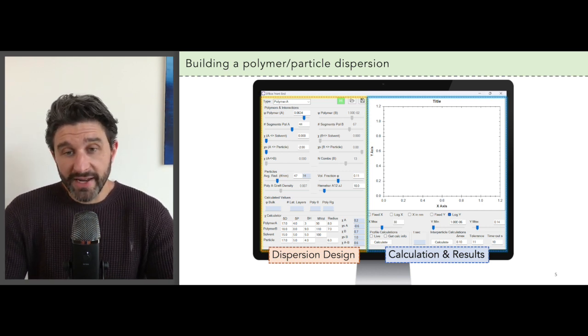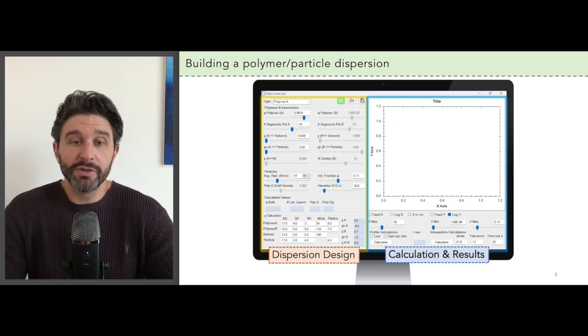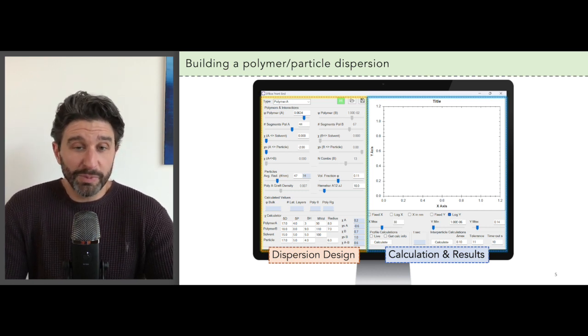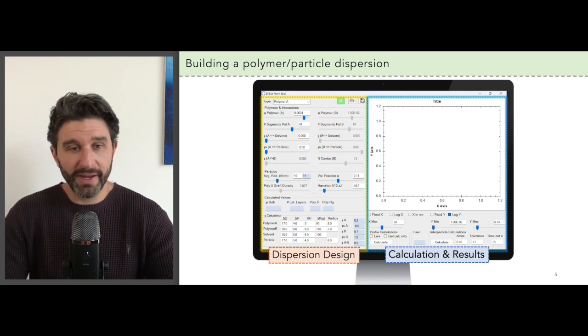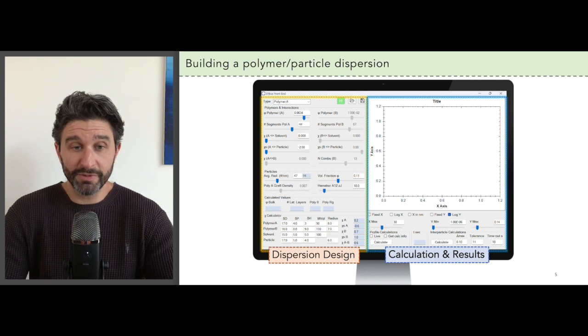Turning over to the right hand side, this is where you perform the calculations and view results. This is just a simple plotting window, and then at the lower right you have a series of controls to set up how the plot looks and also the buttons to perform the calculations.